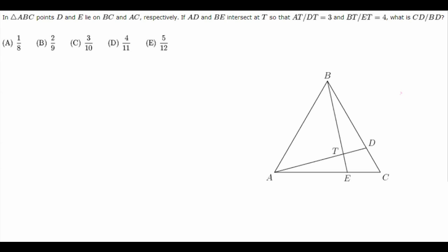so the problem statement says that AT divided by DT equals 3. So if this is 3, then this is 1. And BT divided by ET equals 4. So if this is 1, this is 4.